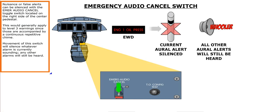Nuisance or false alerts can be silenced with the Emergency Audio Cancel Toggle Switch, located on the right side of the center pedestal. This would generally apply to level 3 warnings since those are accompanied by a continuous repetitive chime. Movement of this switch will silence whatever alarm is currently sounding. Any other alarms will still be heard.